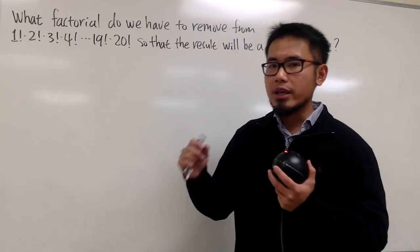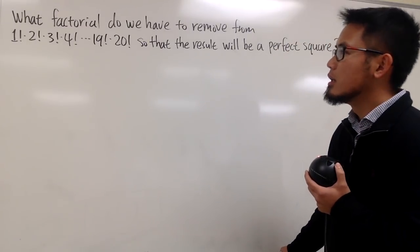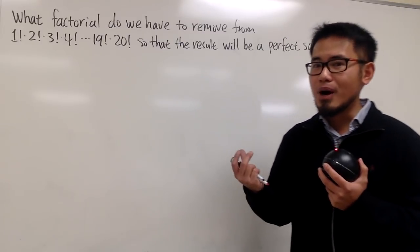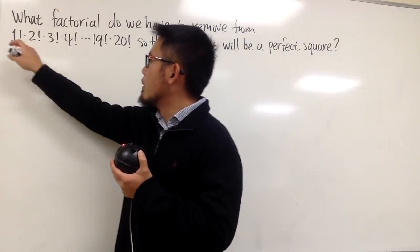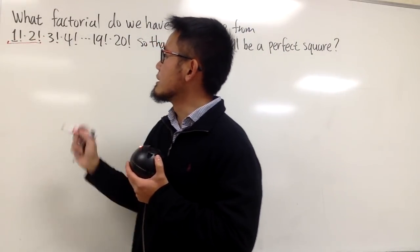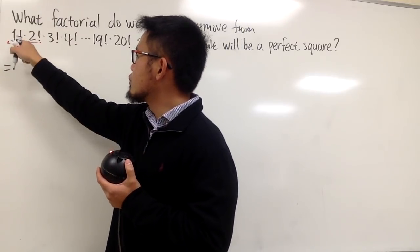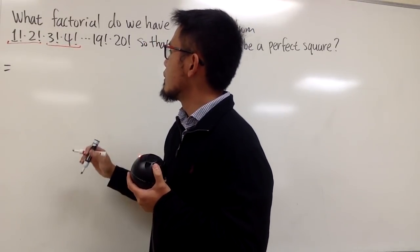So for example, we can have 17 to the fourth power, that's actually a perfect square. That's an idea. And if you want to have anything that's with the even power, let's just pair things up evenly. For example, let's take a look of these two things together.